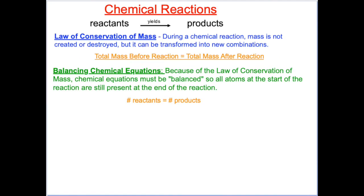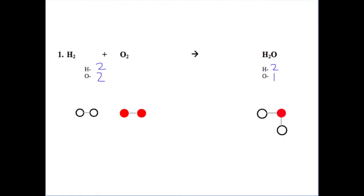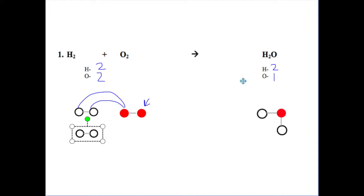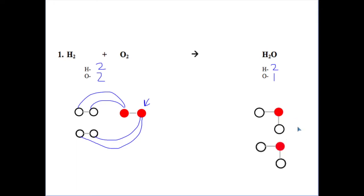We need to balance the equation so the reactants equals the number of products and all the atoms at the start of the reaction are still present at the end. During a chemical reaction, atoms break their bonds and form new bonds with other atoms. I can make one water molecule by using two H's and one O. But I would have this oxygen left over. If I had two H2 molecules, I could use those two hydrogens and bond them with the oxygen to make a second water molecule. So I have two H2s and one O2, making two H2Os.